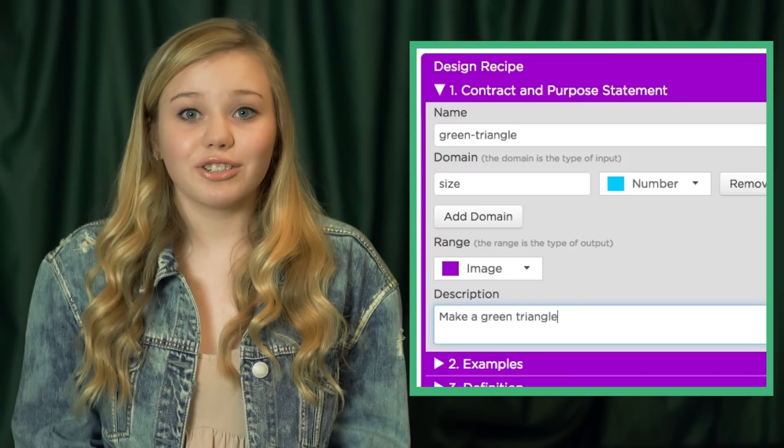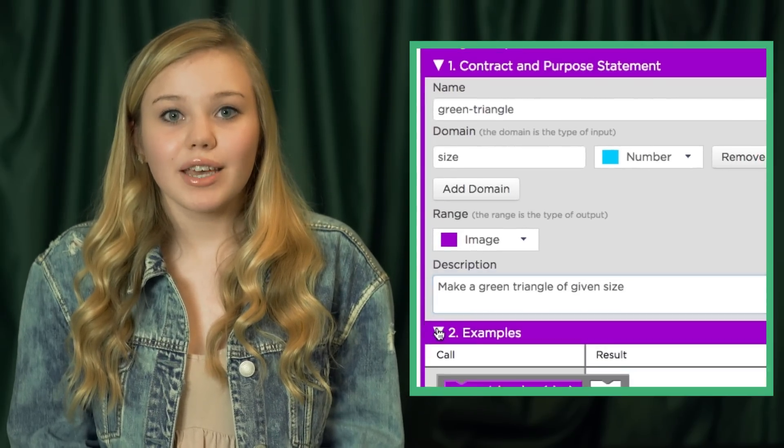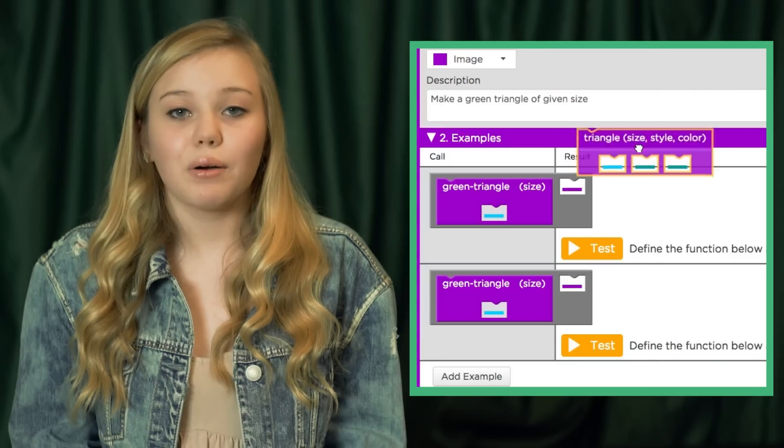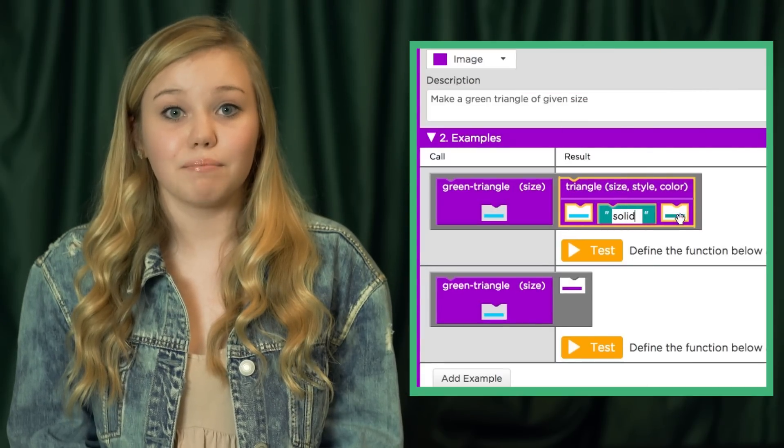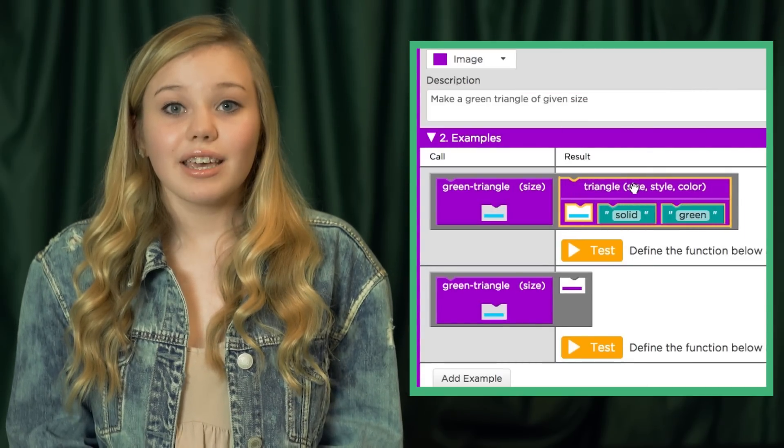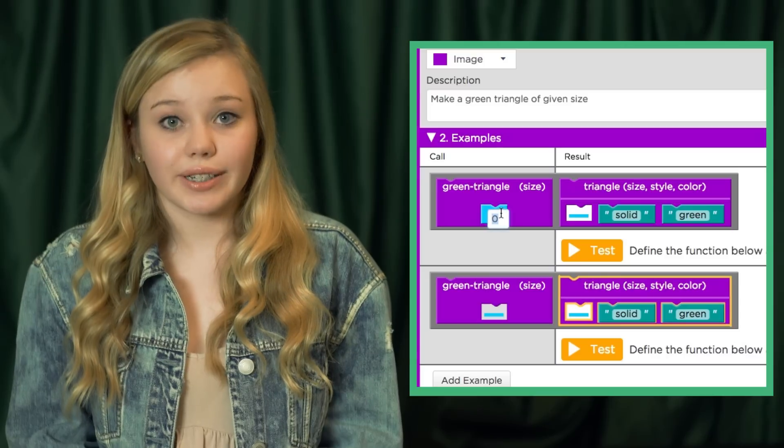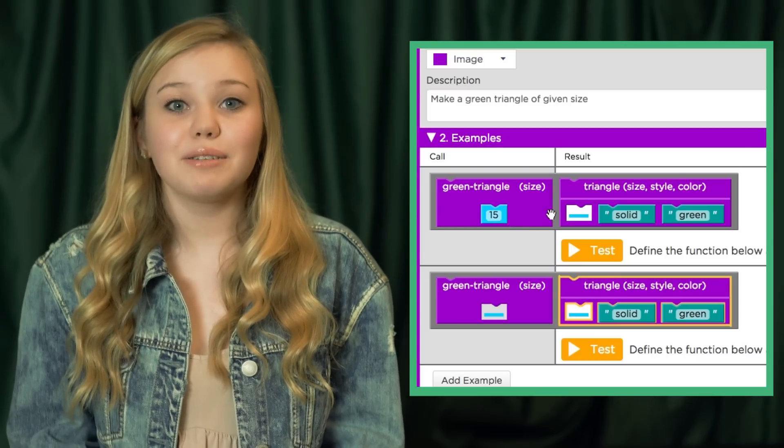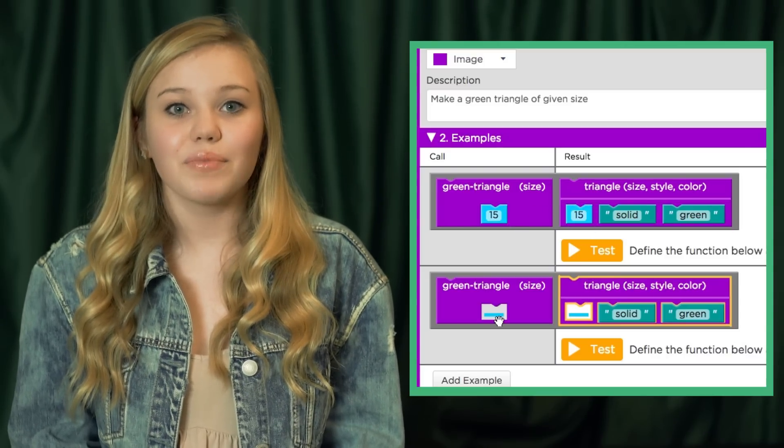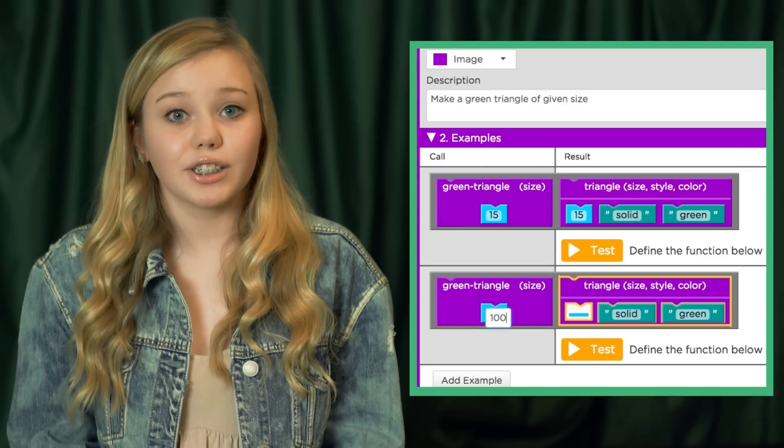Now that we have a contract, let's write some examples. These will be concrete examples of how our function should operate with specific inputs. If we pass the number 15 to green triangle, it should return a 15 pixel solid green triangle. If we pass the number 100 to green triangle, it should return a 100 pixel solid green triangle.